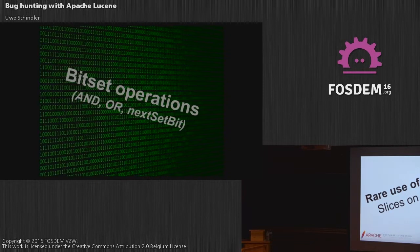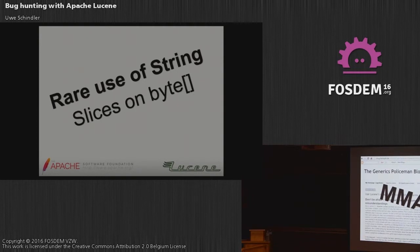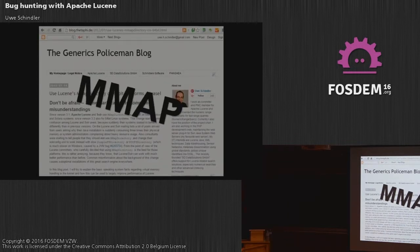One important thing to mention: Lucene uses strings only in user-facing APIs. Everything internally works on byte arrays containing UTF-8 bytes. FSTs operate on large byte arrays and slices on top of them. And the whole index on 64-bit machines is completely memory-mapped using MappedByteBuffer, which makes it really fast, allowing random access while sorting and searching.